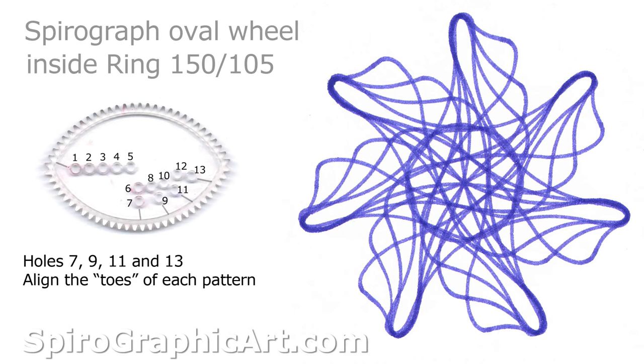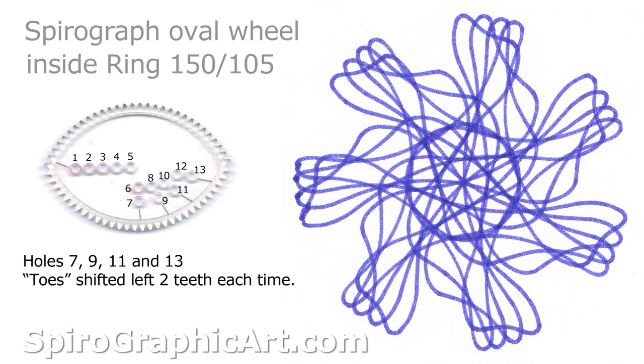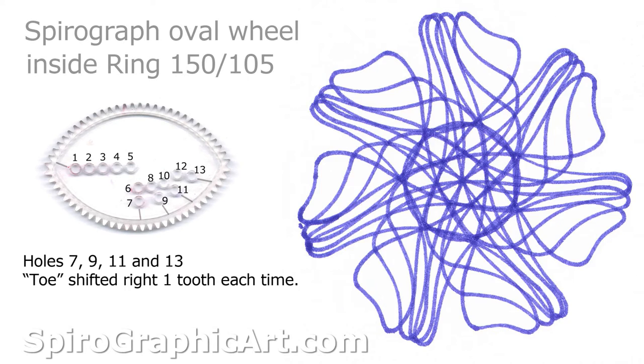Holes 7, 9, 11, and 13. This is starting with the hole on the flat side of the wheel and then the other ones 9, 11, and 13. Keep the holes lined up in the same place and you get something like this. Or you can move them over each time. Line them up and then shift them over and you'll get different effects.